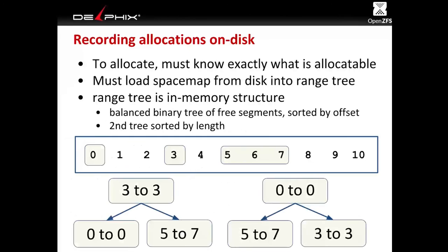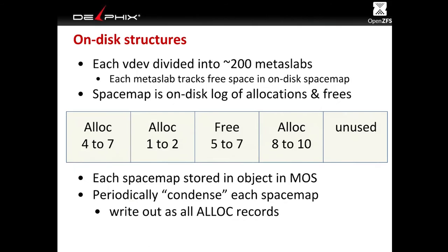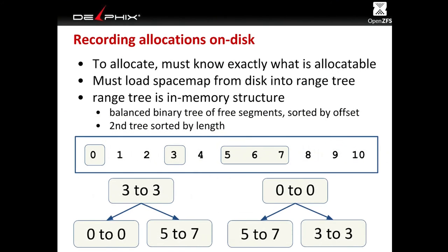To summarize the relationship: a metaslab is one-to-one with a space map, which is one-to-one with a range tree. The metaslab is the region of space and the code in charge of it. The space map is the actual on-disk representation of allocated and free space. The range tree is the in-memory representation. We generate the range tree only when doing allocations from that metaslab — this is another advantage of sticking with one metaslab for a while, since we load it once and do many allocations from it.